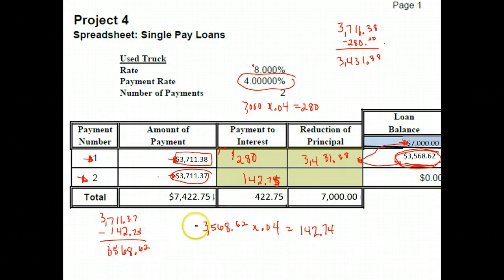We would hope, and it did come out that way, that it takes away the rest of our loan, and it does. The balance on the loan was $3,568.62, and that's exactly the amount of principal we reduced, so that when we put these two together, we've paid off our full $7,000 plus this much in interest if we total down.